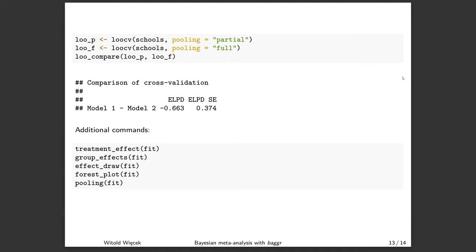There is, of course, much more, and all of it is written in pretty plain syntax. So the things that I could have been doing to examine my model here are commands such as treatment_effect, group_effects, draw, effect_draw, which is draw from predictive distribution, forest_plots, other pooling and heterogeneity statistics, using pooling or heterogeneity command, et cetera. But that's the basic outline of the package.